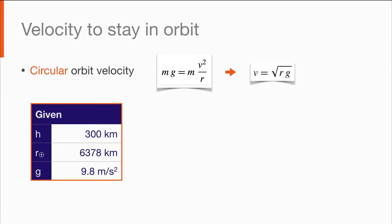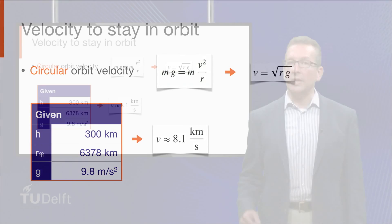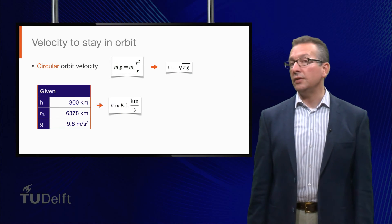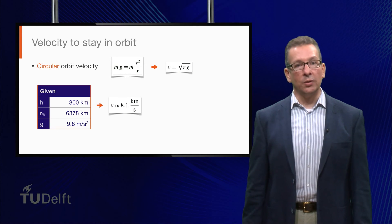So let's consider an altitude of 300 kilometers again, which is equivalent to a radius of about 6700 kilometers. Using 9.8 meters per second squared for g, we find that we need a velocity of 8.1 kilometers per second to stay in a circular orbit. That's quite a bit more than the 2.4 kilometers per second that we needed merely to reach this altitude. Fine. So do we need to launch our satellite at this speed? Well, not quite.